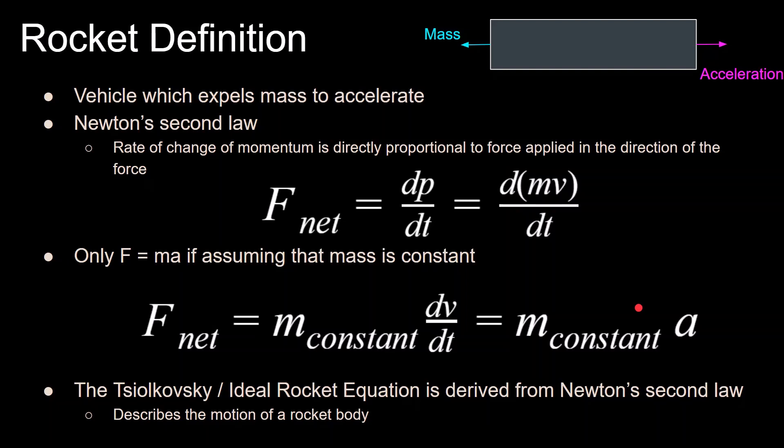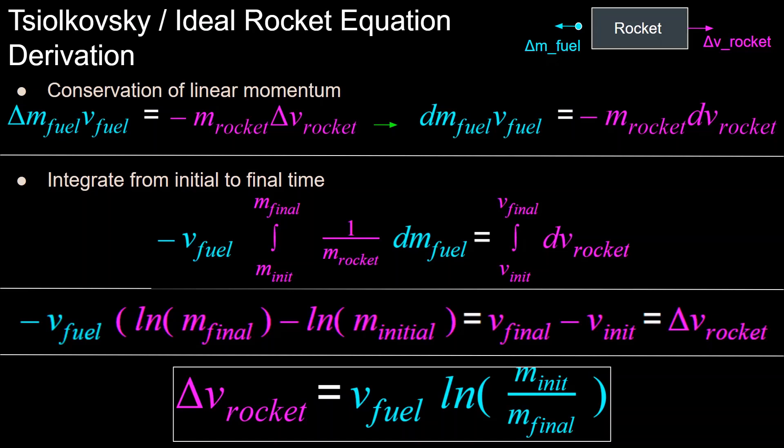But for rockets, this mass is constantly changing, so we cannot make this assumption. Here we get to the derivation of the most fundamental equation in all of rocket science, the Tsiolkovsky ideal rocket equation, where we start with conservation of linear momentum. The mass of the fuel times that fuel's velocity is equal to the mass of the rocket times the delta V of the rocket. When we take the limit as a piece of mass approaches zero, the deltas become Ds, as we see in calculus.